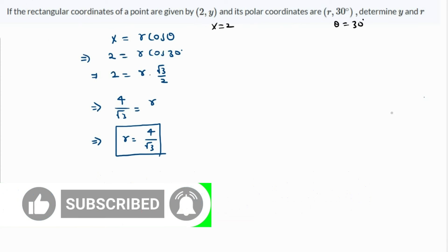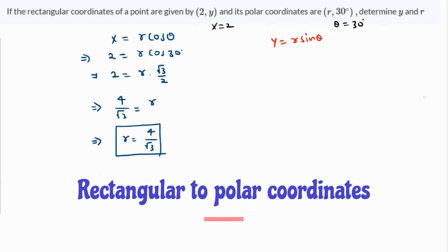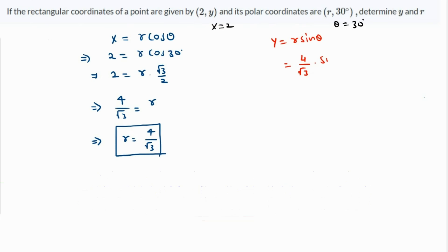So we got the value of r, and from here we can easily get the value of y because y is r sin θ. We got the value of r as 4 over √3, and this will be sine of θ, which is 30 degrees. So that's going to be 4 over √3 times sin 30, which is 1/2, so that's going to be 2 over √3. That is the value of y.